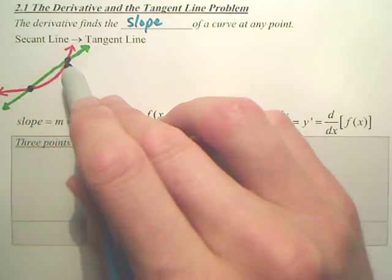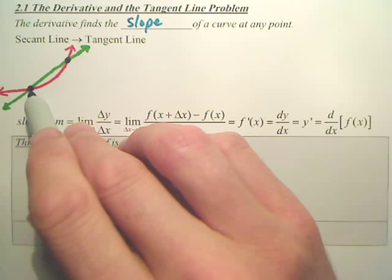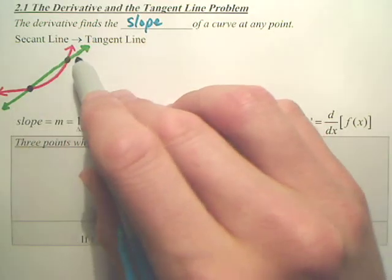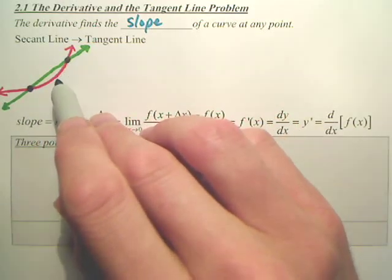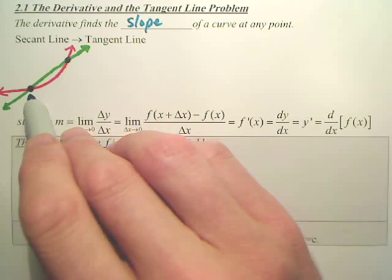Now, do you understand the closer I bring this dot to this dot, do you understand my slope gets more and more accurate? Can you imagine that? The closer I bring this in, this green line gets flatter and flatter, and it becomes more and more like the slope at that point.